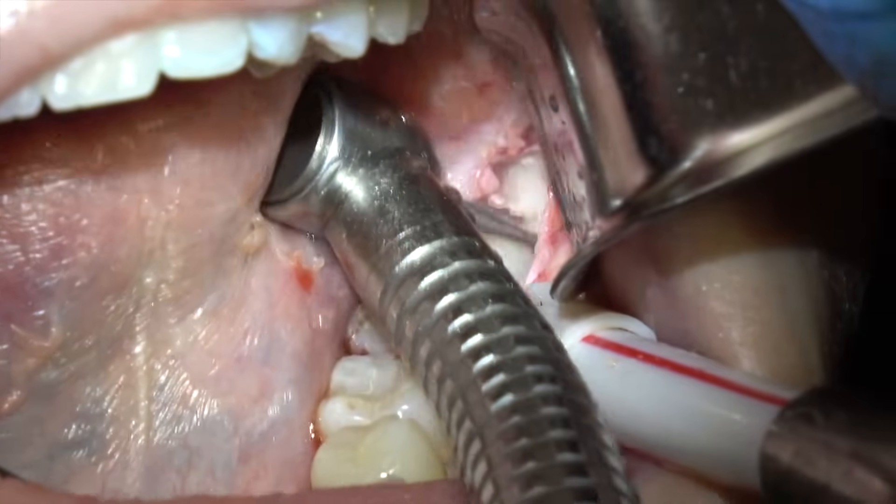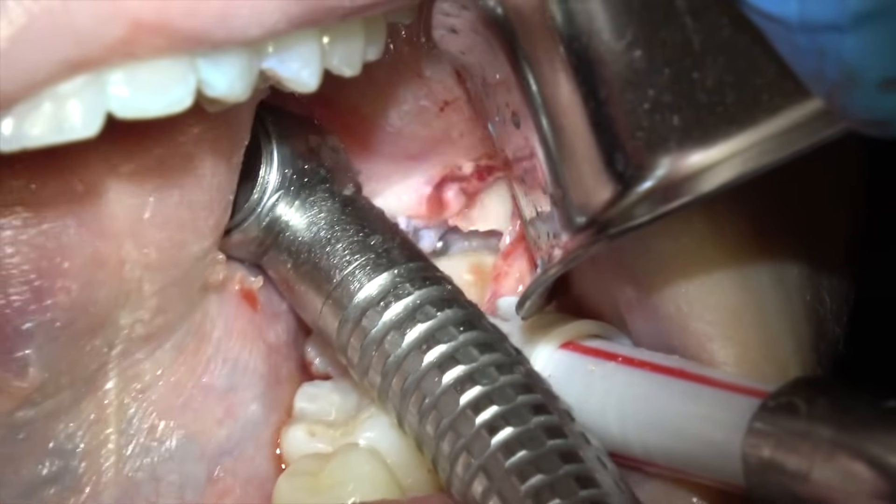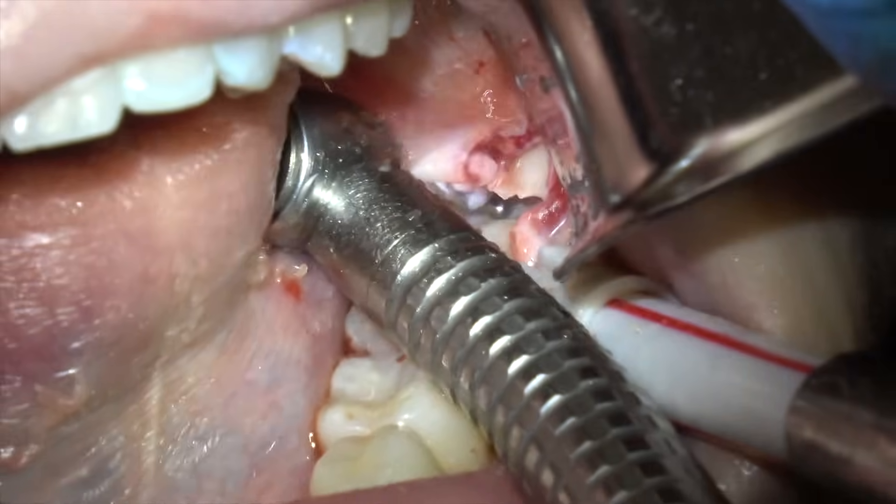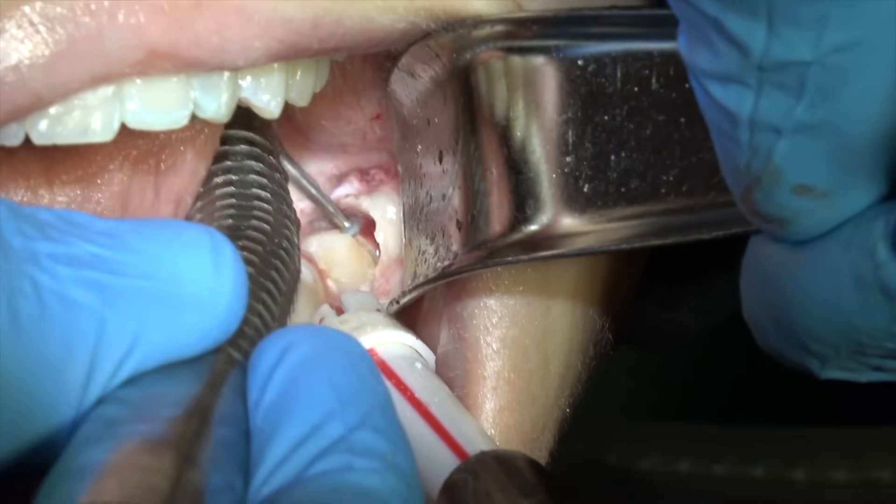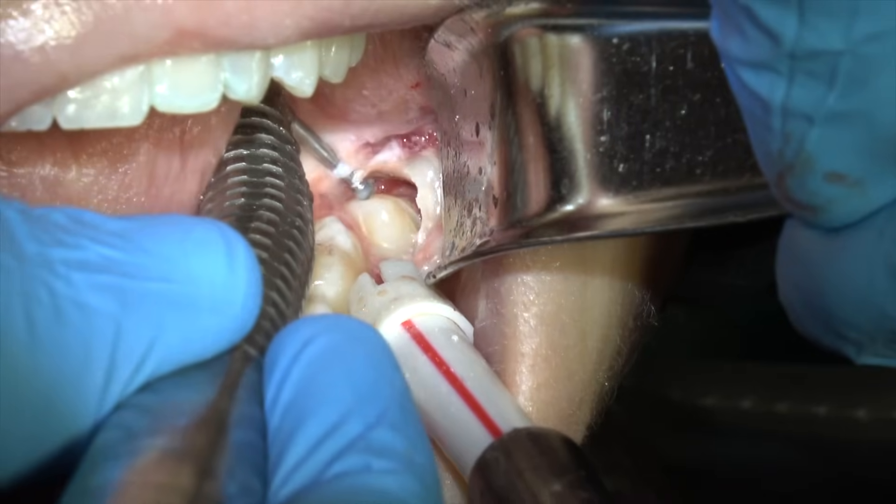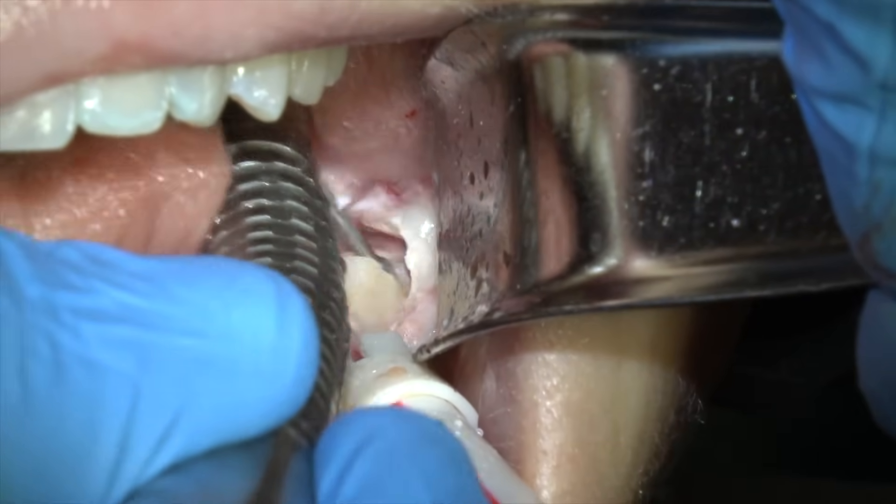Because you've got to have a little space to elevate the distal portion of that tooth. If you don't have any space, you can't elevate it when it's angled forward like that tooth is. But this is why you've got to reflect a pretty good flap. So you can see how the tooth is angled directly into the distal of the second molar. But you've got to create a little space.